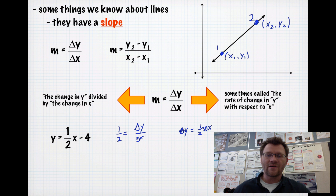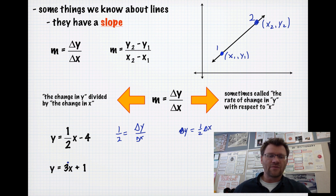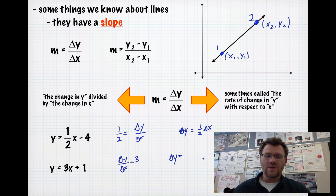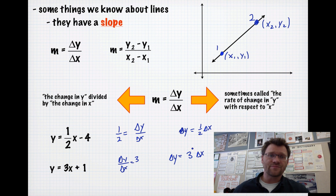So if your change in x is 5, then your change in y is going to be 5 and a half. Likewise, with this example, if we know that our slope is 3, that means delta y over delta x equals 3. If we solve for delta y, we get 3 times delta x. So every time that you change your x a little bit, your y value is going to be 3 times larger.